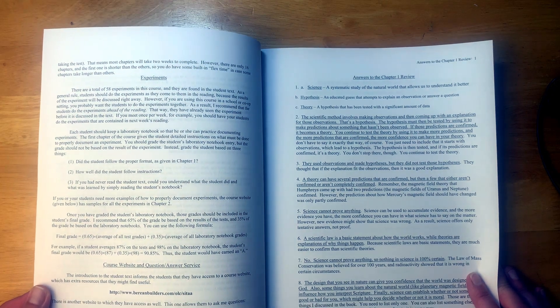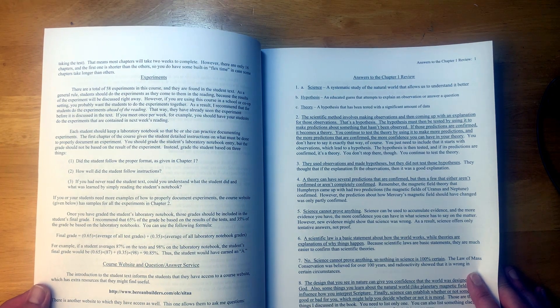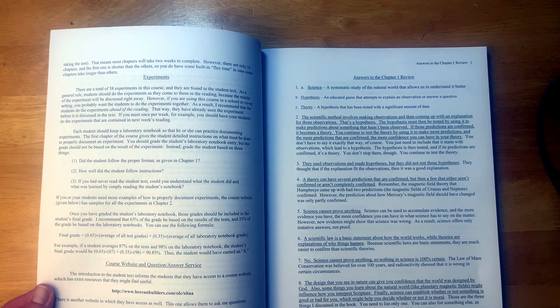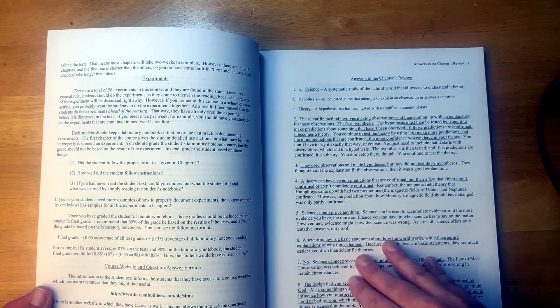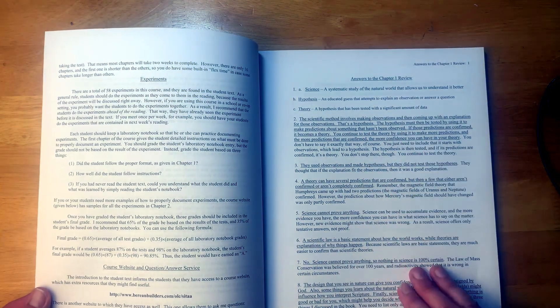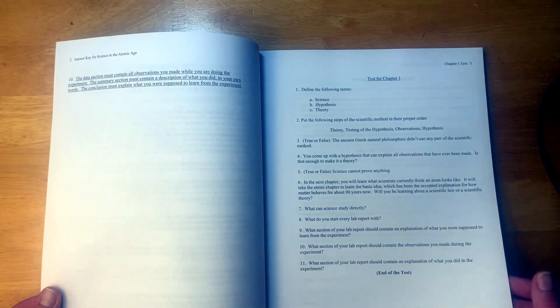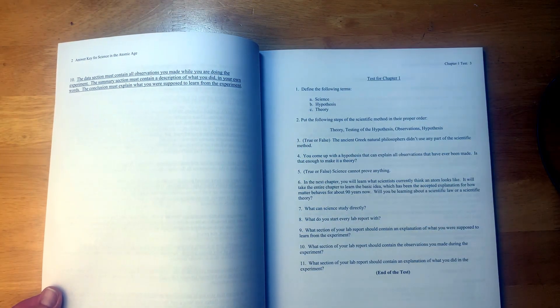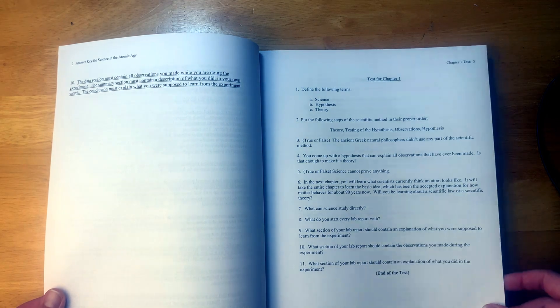As a general rule, students should do the experiments as they come to them in the reading. Yeah, we talked about that. Okay, so then we have answers to chapter one review. So when they do their review, you can go over the answers with them. And then here's the test for chapter one. So each chapter has a test. So it looks like short answer mostly.